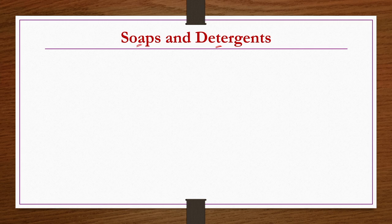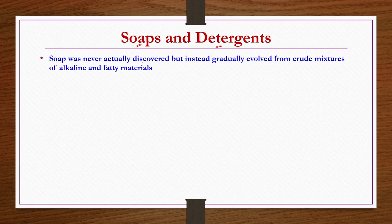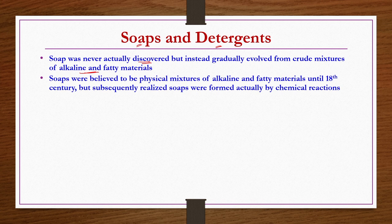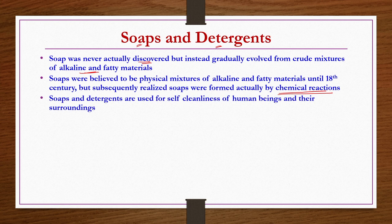Since soaps are also being produced from the constituents of the oil industry, they are considered as natural product industries, whereas detergents are synthetic chemicals. In soaps manufacture we also get glycerine as a co-product, which is why this lecture concentrates on the manufacturing of soaps and glycerine at industrial scale. Before going into the details of manufacturing processes, we will have an introduction about the soaps and detergents industries. Soaps were never actually discovered but instead gradually evolved from crude mixtures of alkaline and fatty materials.